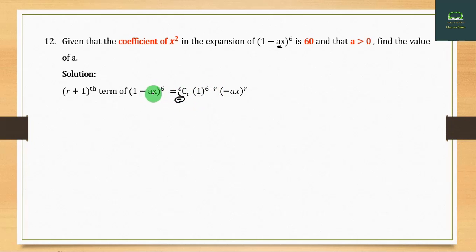Solution: The general term of (1 - xy)⁶ is C_r(-xy)^r. For the x⁵ term, we need r = 5. So the fifth term is C₅(-a)⁵y⁵ = -6a⁵y⁵.